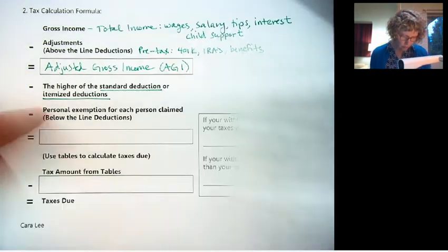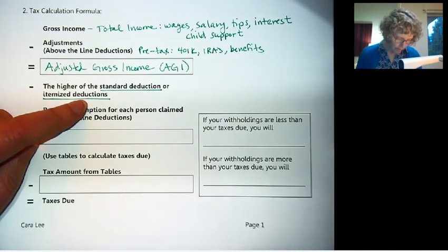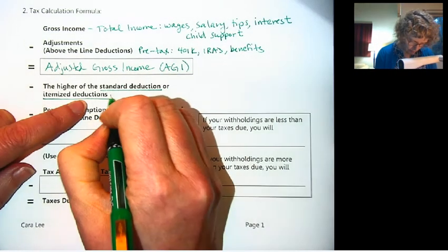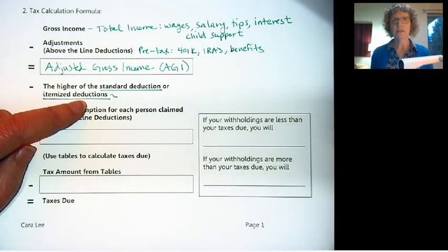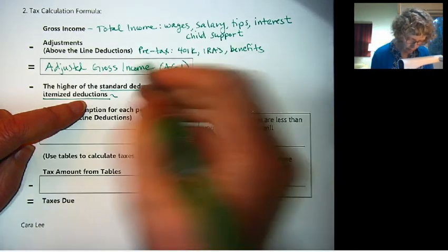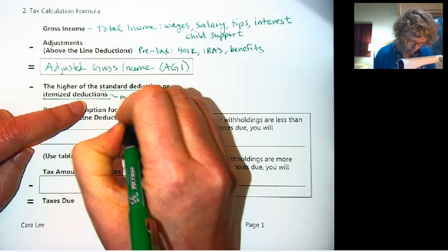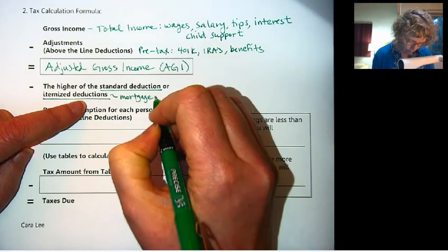Now what are the itemized deductions though? Everyone gets the standard deduction, but itemized deductions are additional tax benefits. So if you own a home, then you can claim mortgage interest as a deduction. So that's a big one for homeowners, mortgage interest.